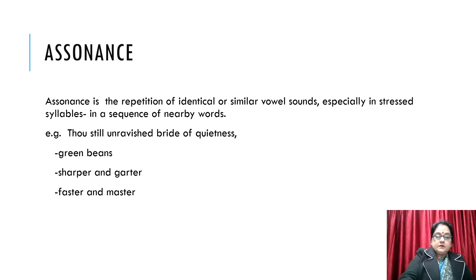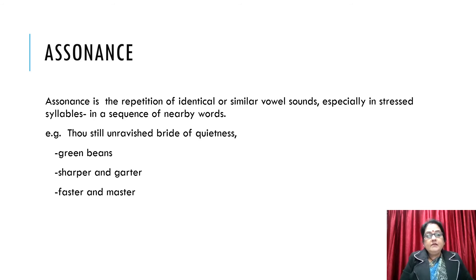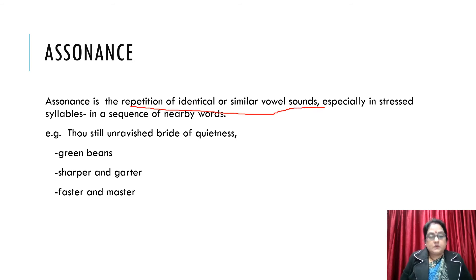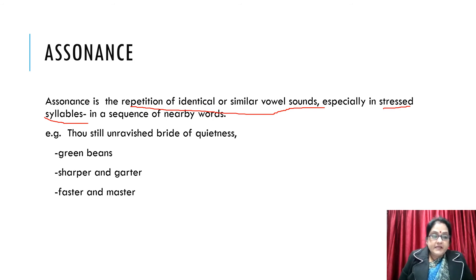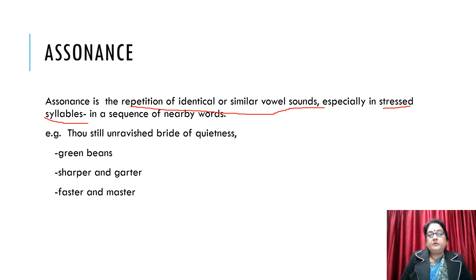Now let's learn what is assonance. Assonance is a repetition of identical or similar vowel sounds, especially in stressed syllables and in a sequence of nearby words. Stressed syllables means that the vowel must be stressed and held for a longer time.